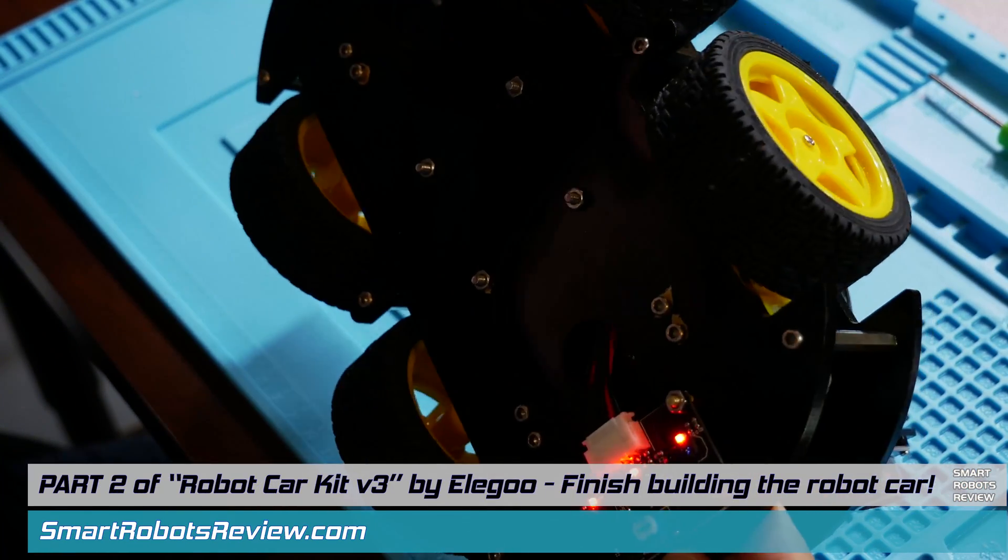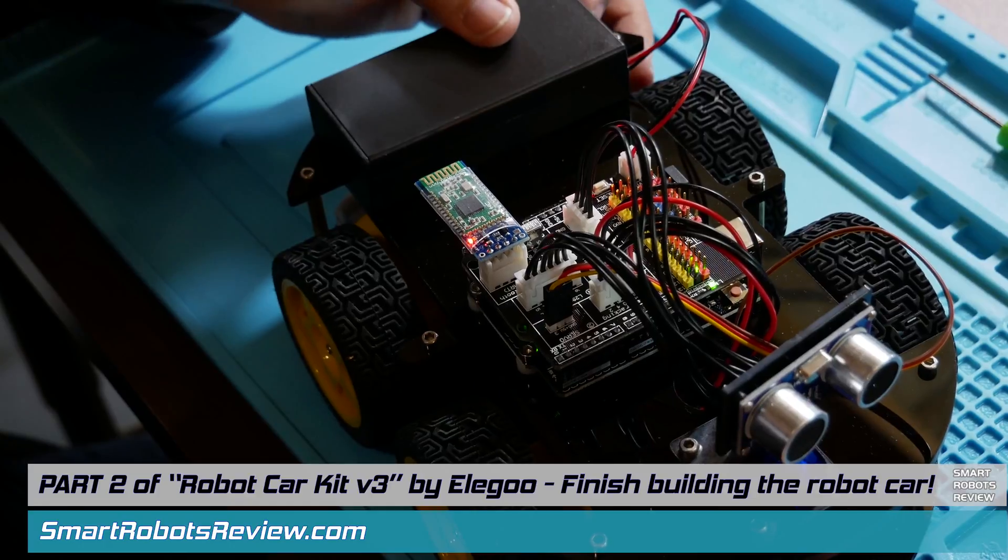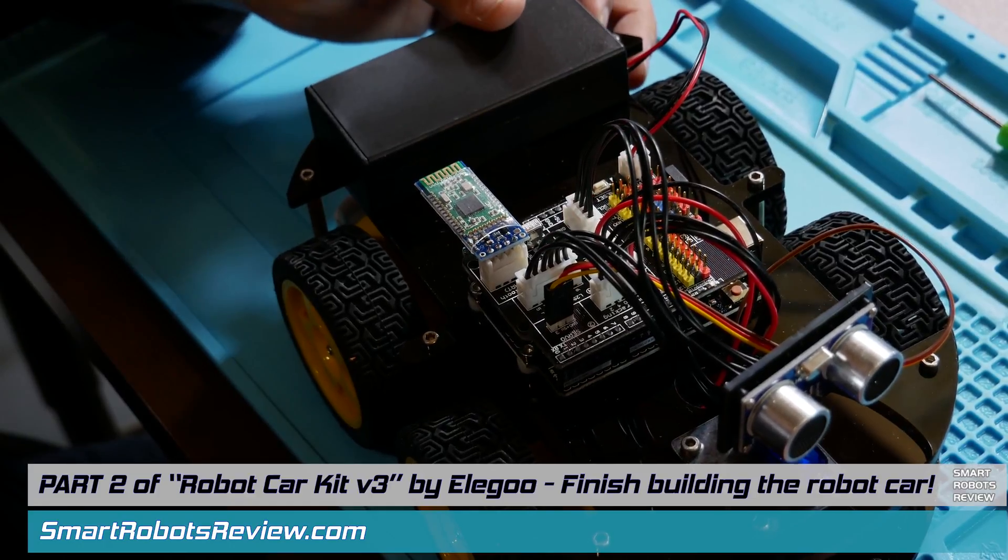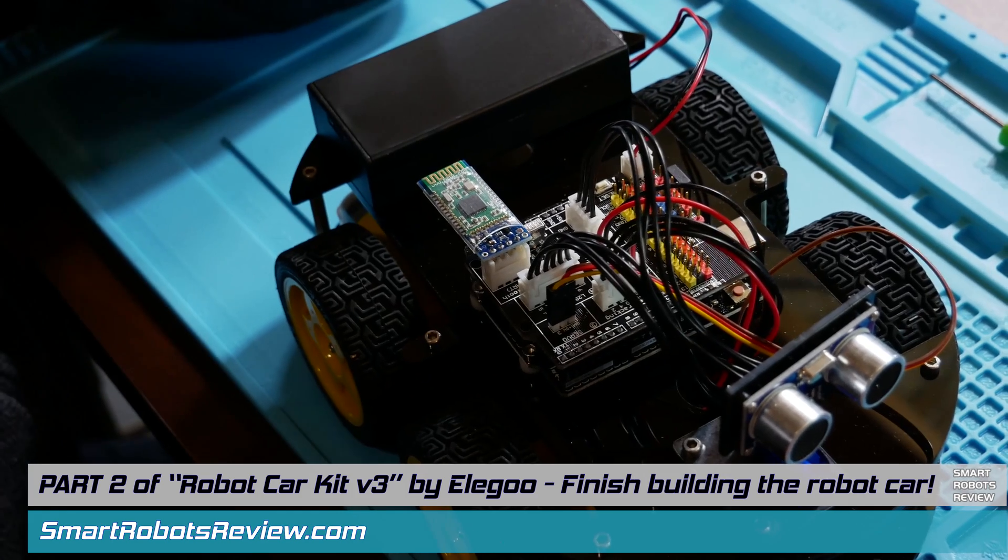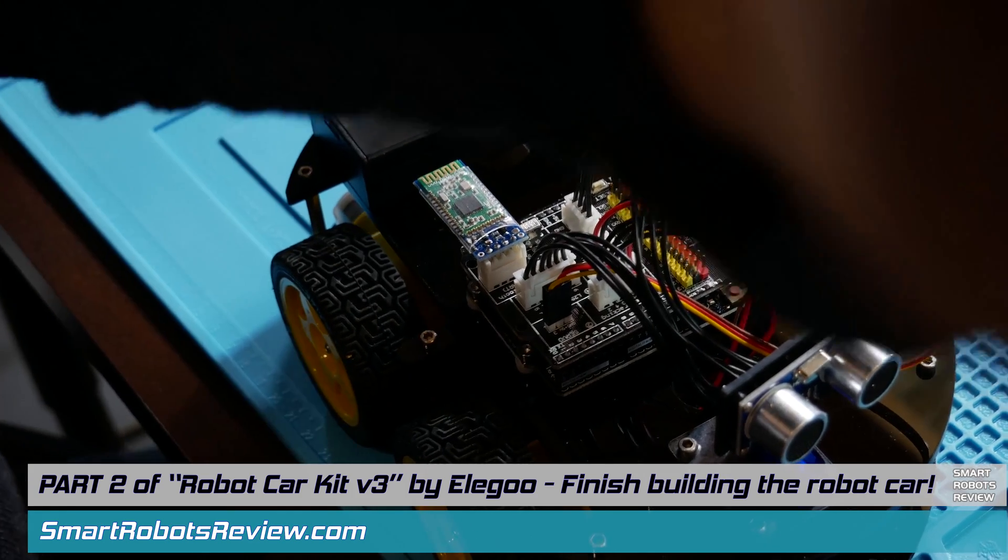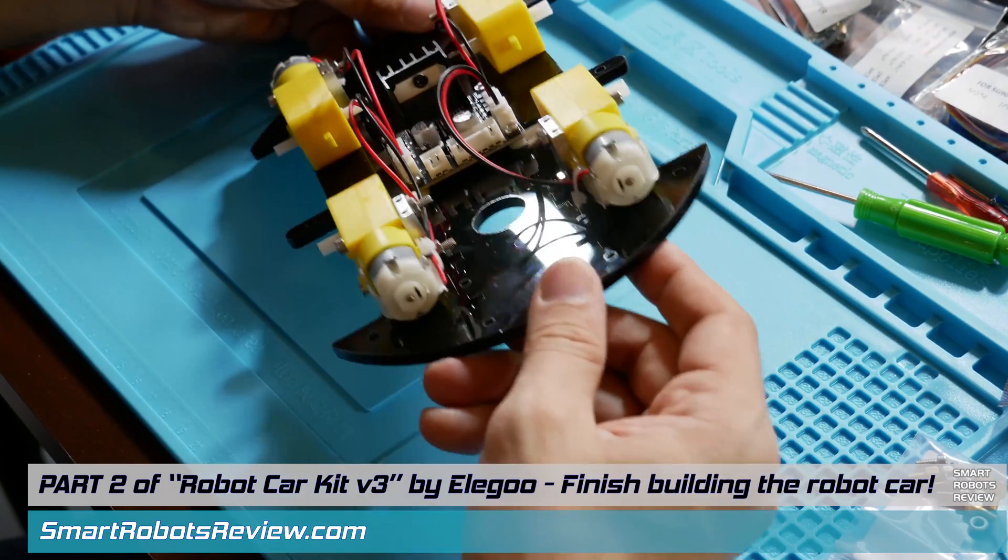On this episode of Smart Robots Review we're going to continue building our smart robotic car based on Arduino using the Elegoo kit version 3.0. On the last episode we started building the body and today we're gonna finish it. Stay with me, it's gonna be fun.